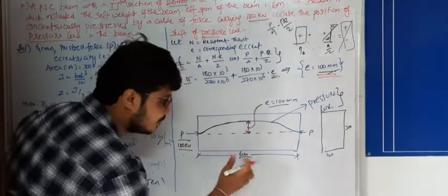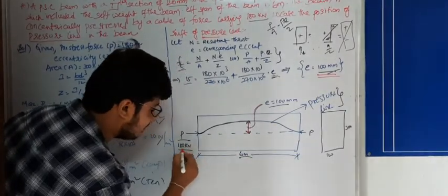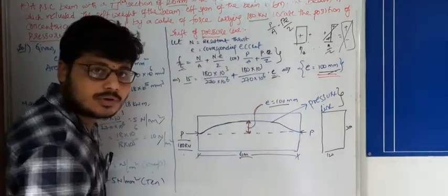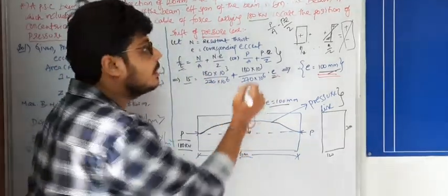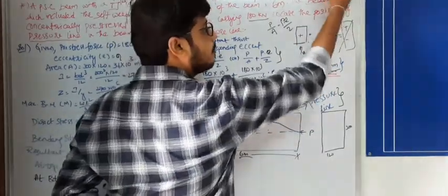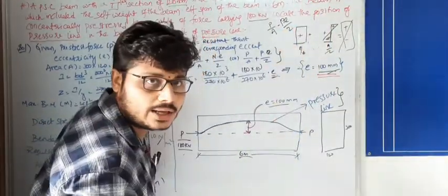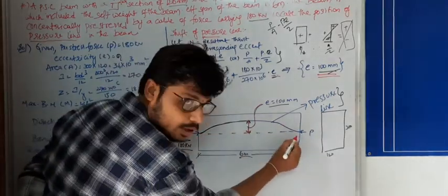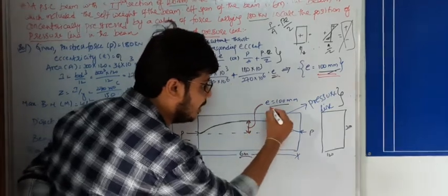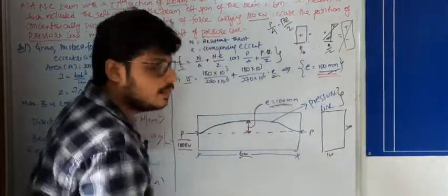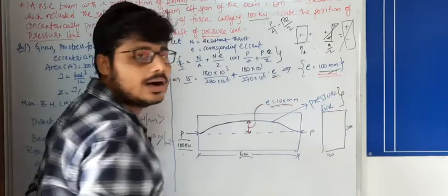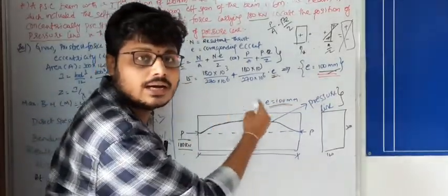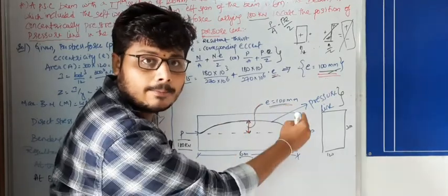Representing in a figure: this is the rectangular beam cross-section. The prestressing force is 180 kN, and the tendon follows a parabolic profile because the applied load is a UDL. The eccentric distance is 100 mm. This is the line where the resultant stress shifts — the pressure line.